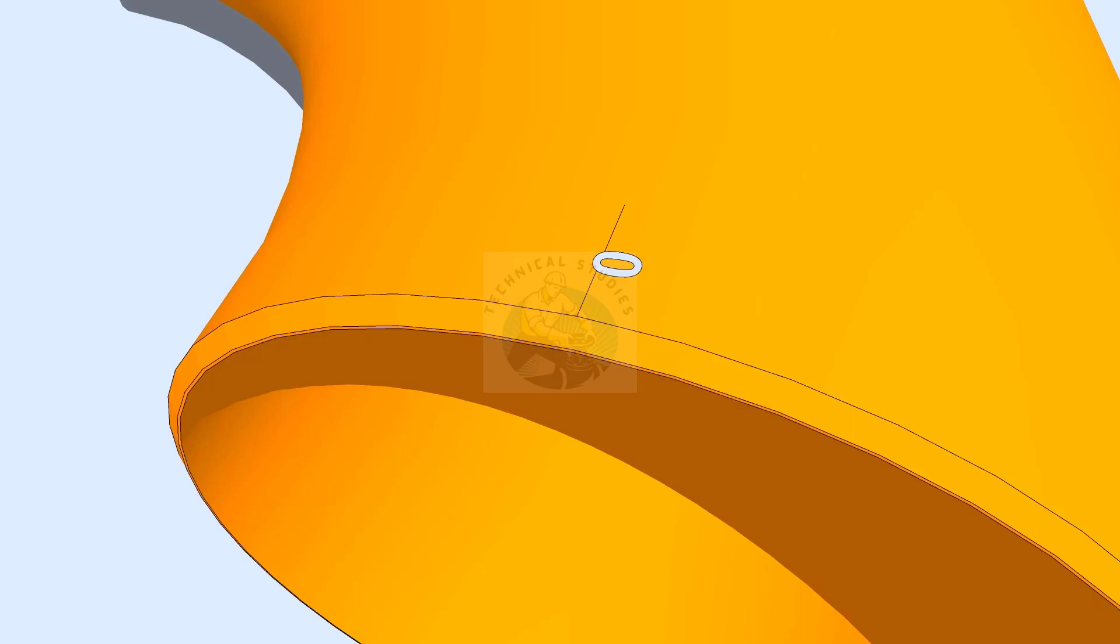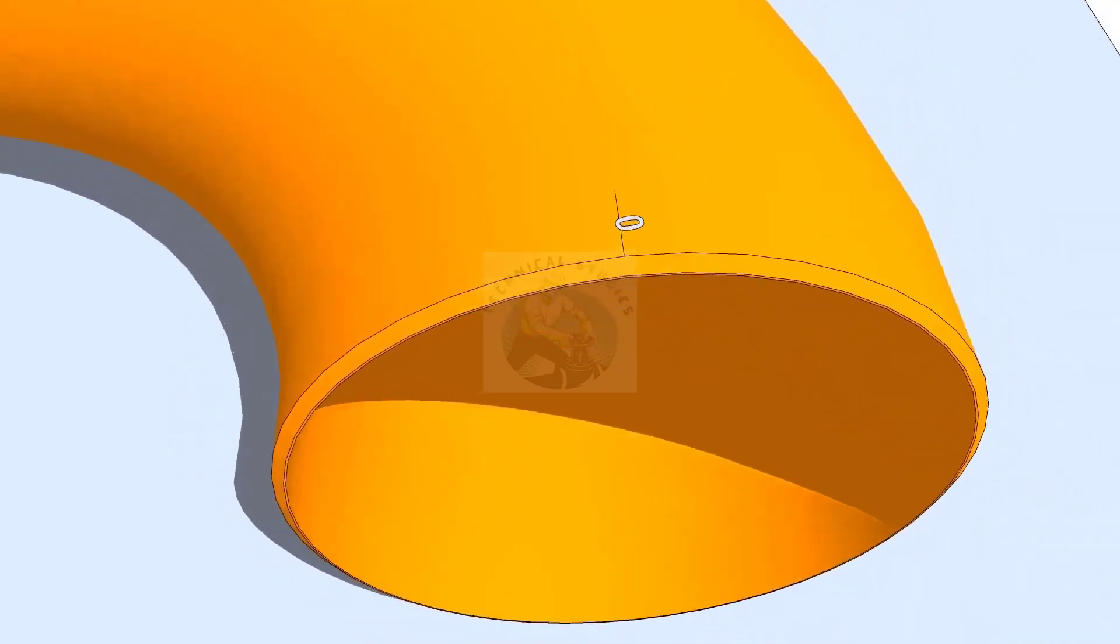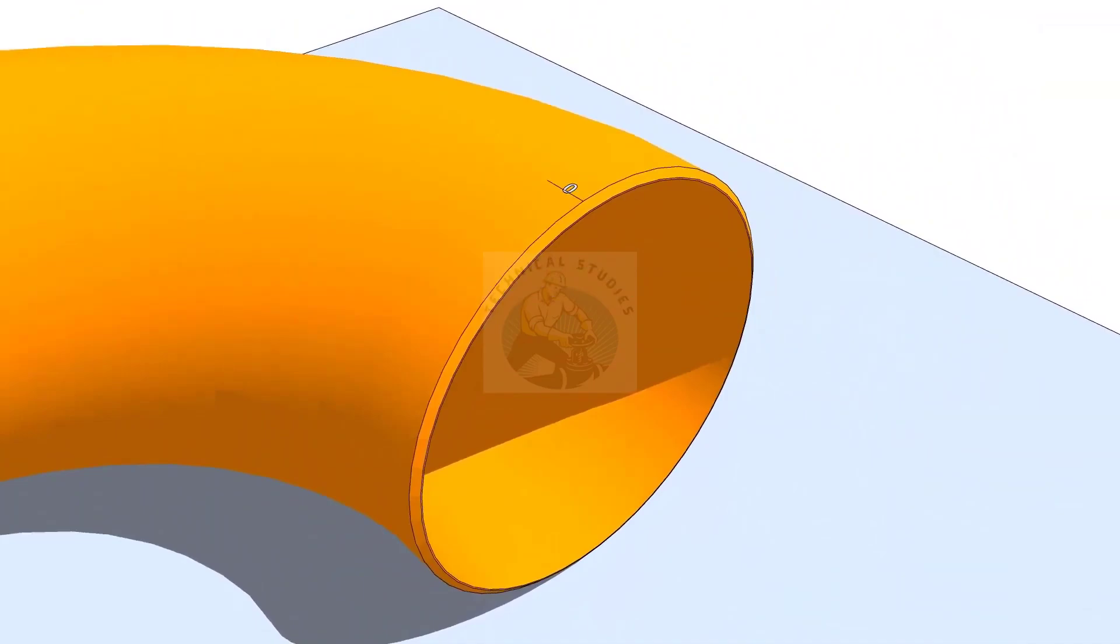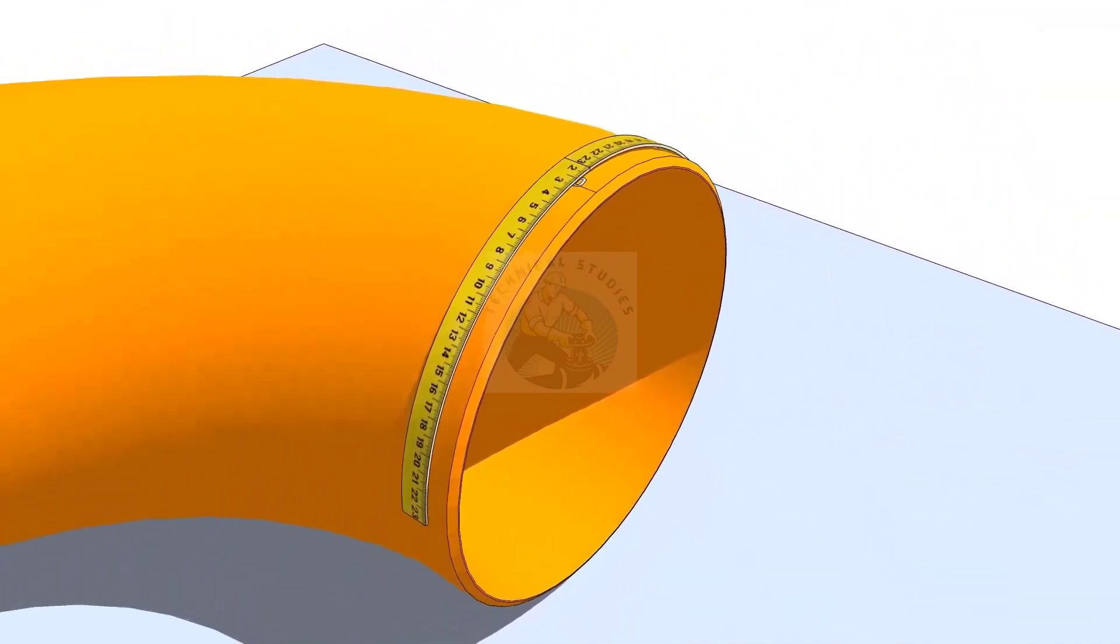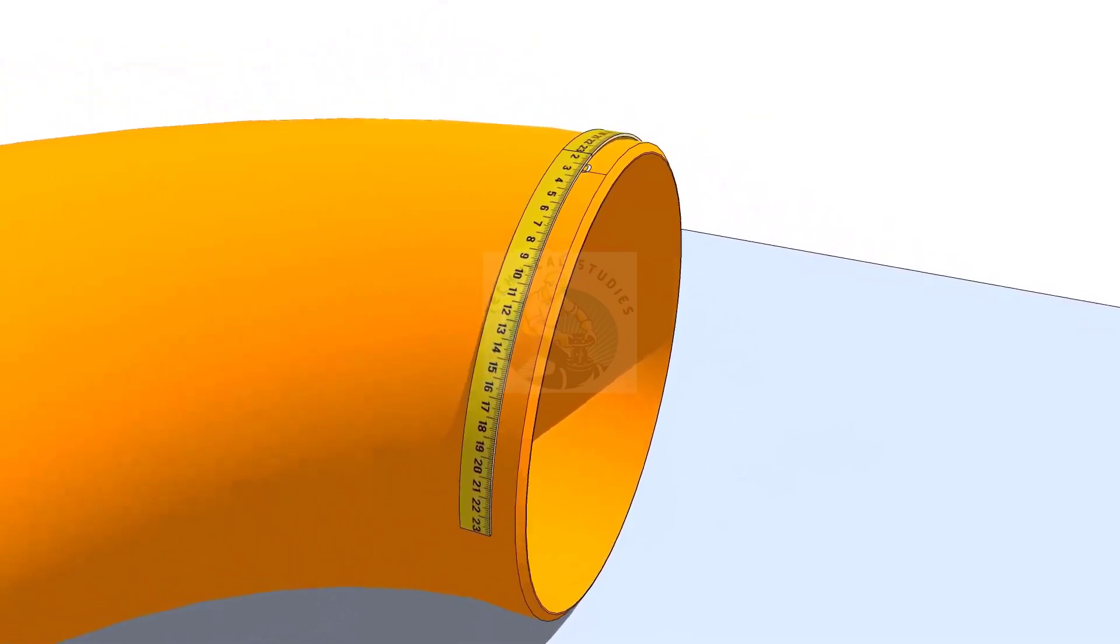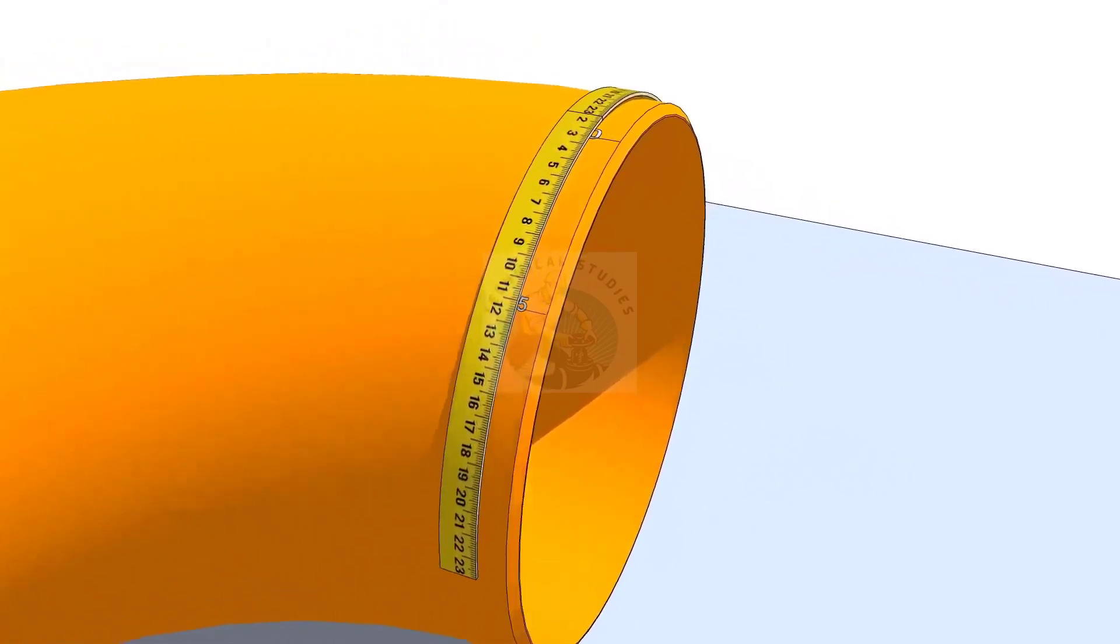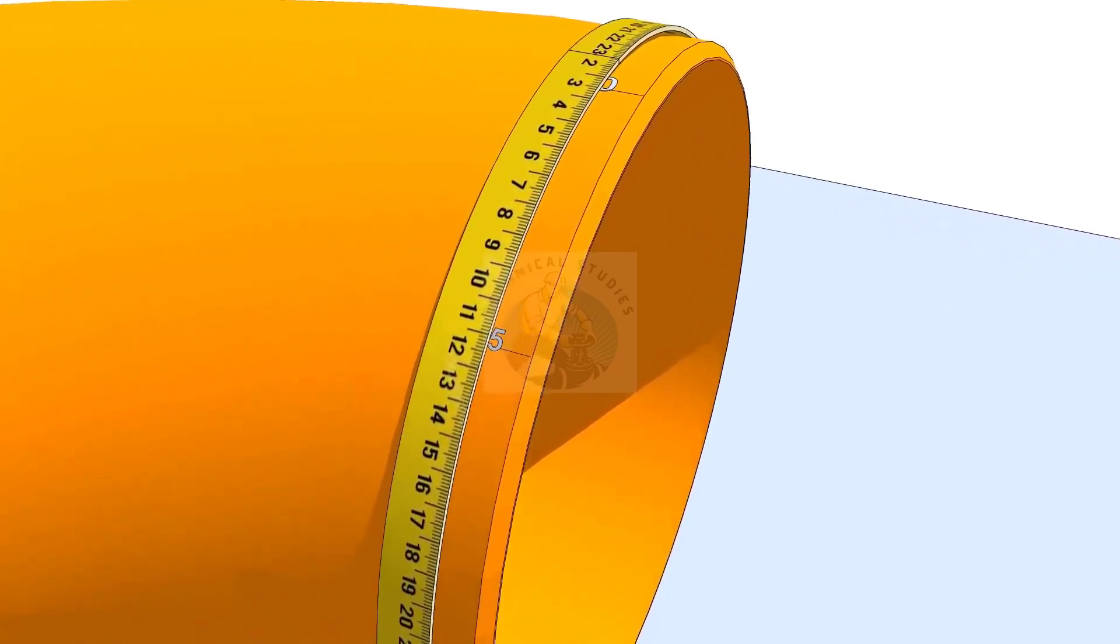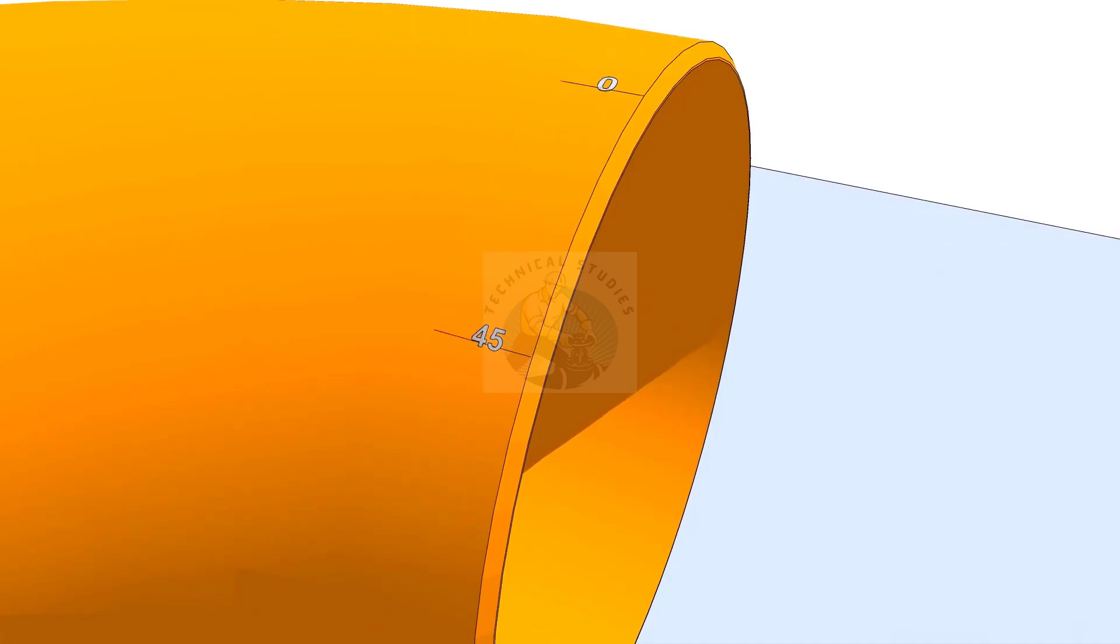Check the circumference of the elbow at one end. Because the rotation is 45 degree, divide the circumference into 8 equal parts. Since the diameter of the elbow is 406 millimeters, one-eighth part is 159 millimeters. Mark this measurement anti-clockwise on the elbow, as shown, and label it as 45 degree.